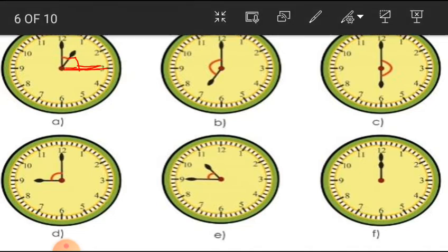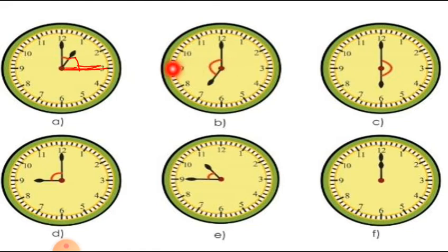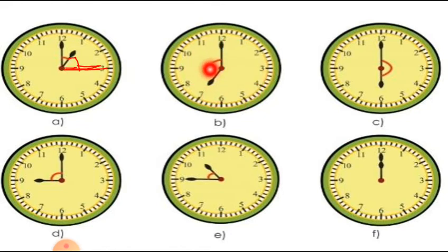Here, one needle is pointing to 12 and the other one is pointing to 7. Which type of angle is this? If we drew a line to 9, that would be a right angle, but here it is greater than that, so this one is an obtuse angle.